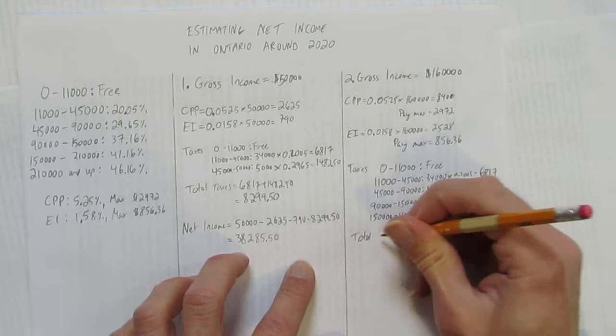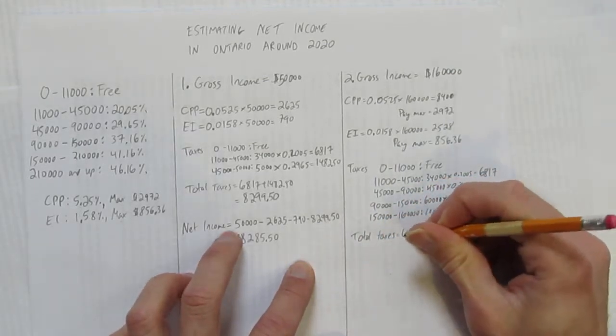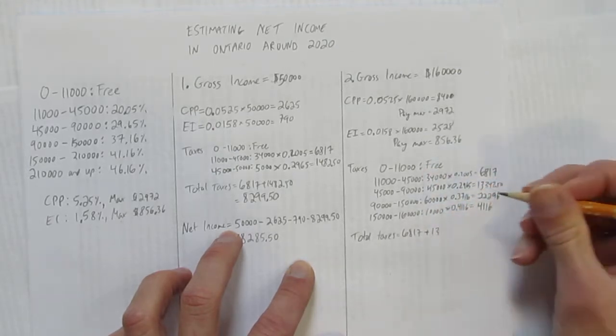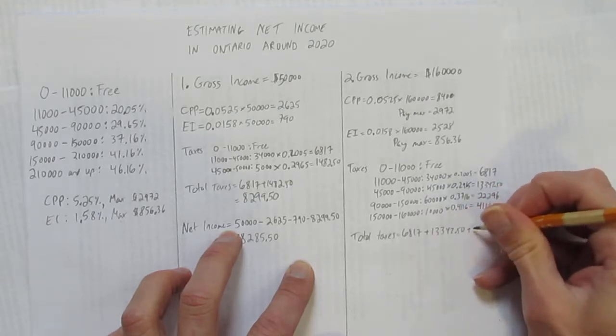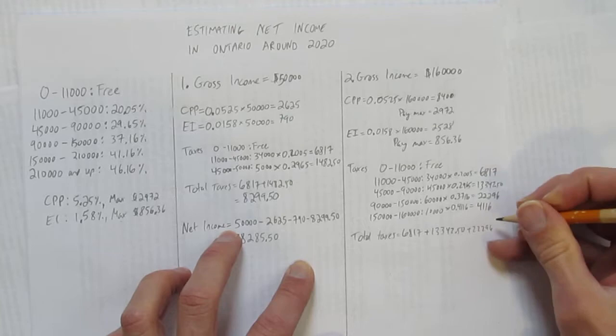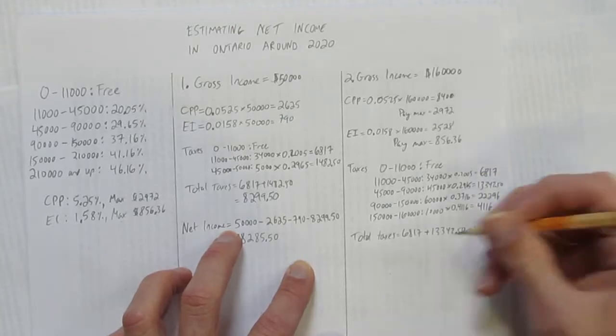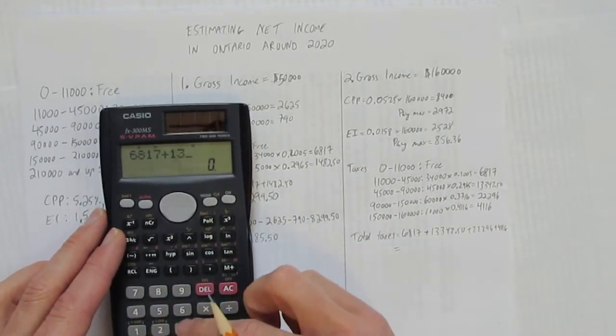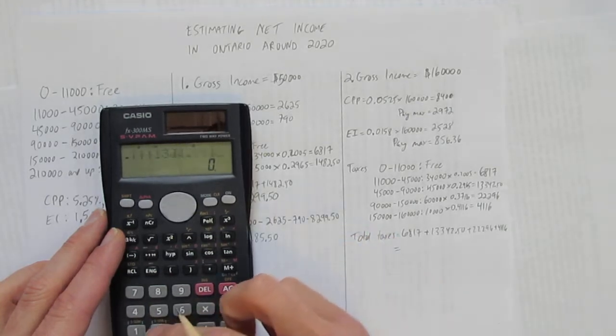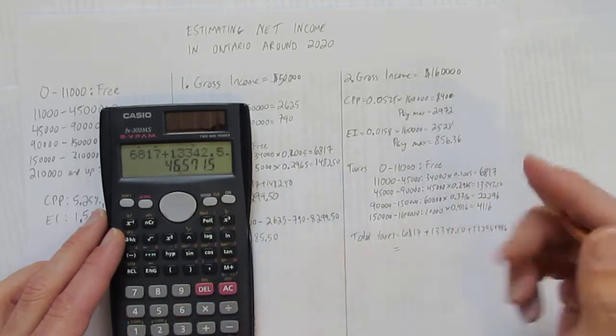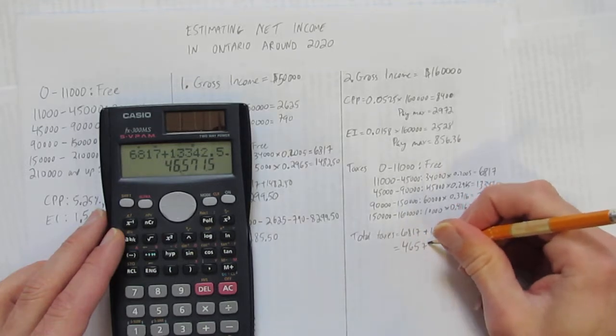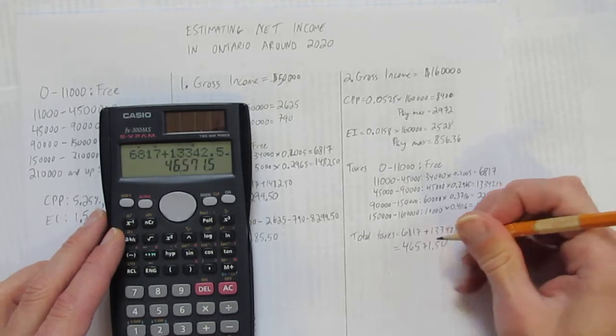So let's calculate their total taxes, which is just add all those numbers together. That's what they paid in that bracket. That's what they paid in this bracket, and they paid $22,296 in that bracket, plus $4,116, which equals, add them all up, $6,817 plus $13,342.50 plus $22,296 plus $4,116 equals $46,571.50.